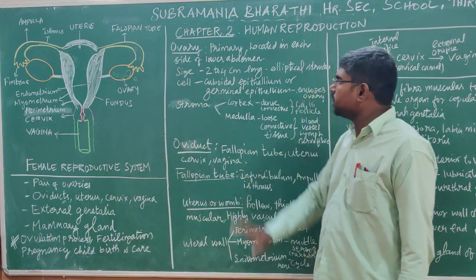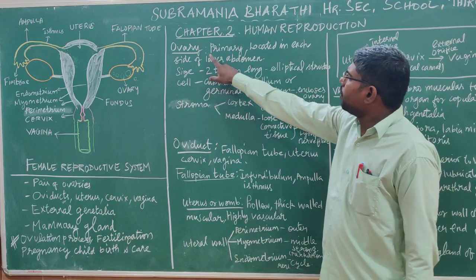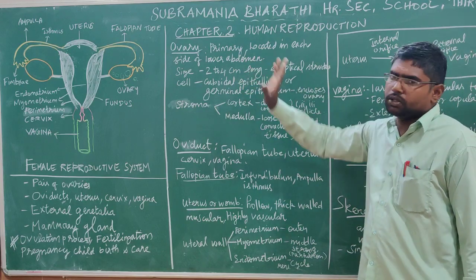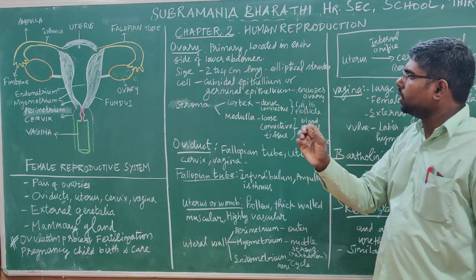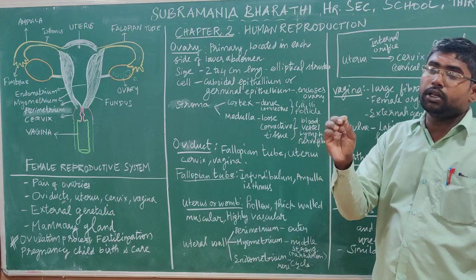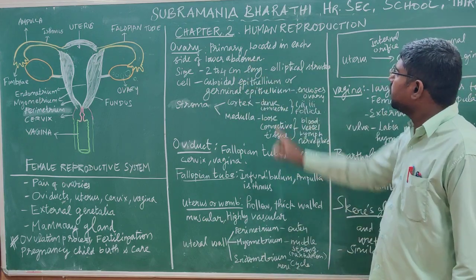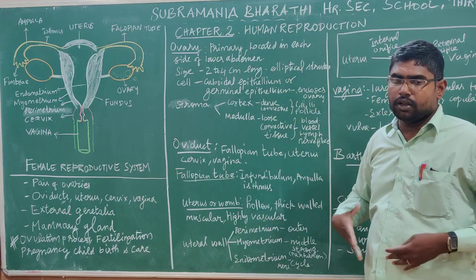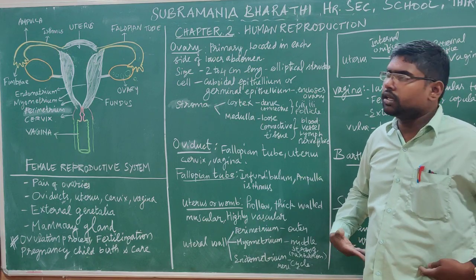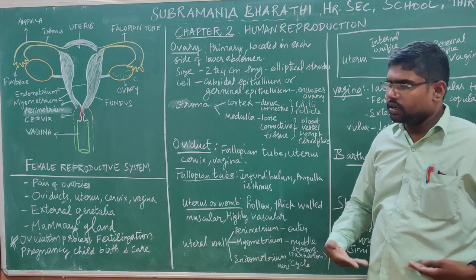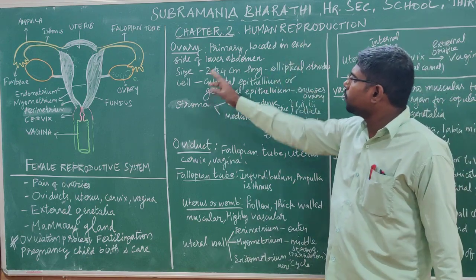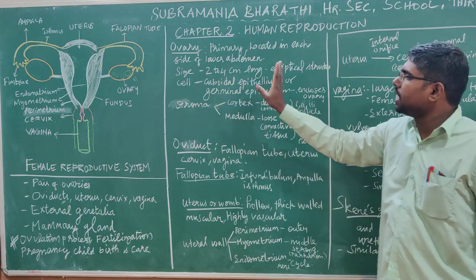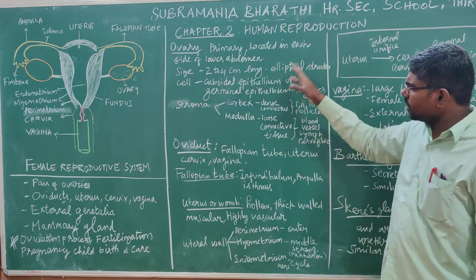Now, one by one, let's go in detail. The ovary is the primary organ. It is located in the lower abdomen — on the right side and the left side, so there are two ovaries. They are the size of an almond and about 4 cm wide. It is an elliptical structure.